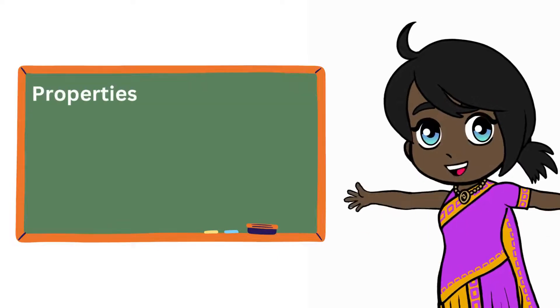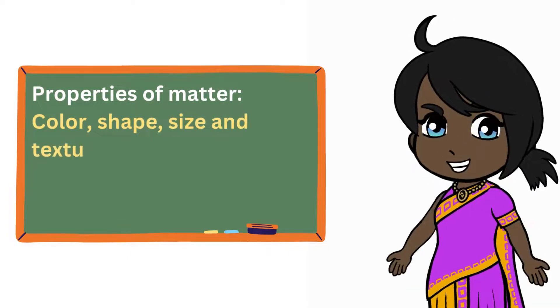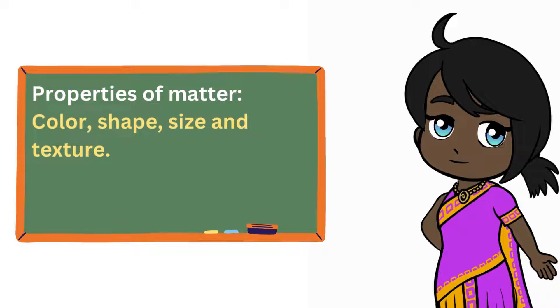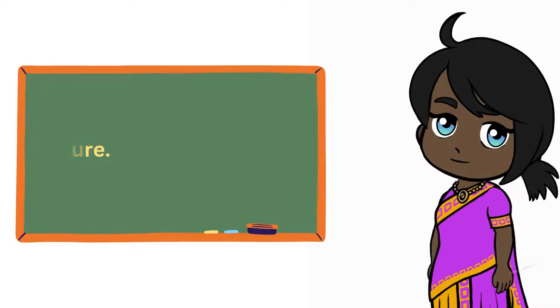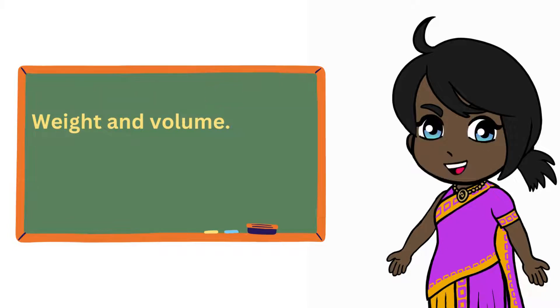All matter has properties that help us identify and describe it. Some properties of matter include its color, shape, size, and texture. We can also measure properties like its weight and volume.